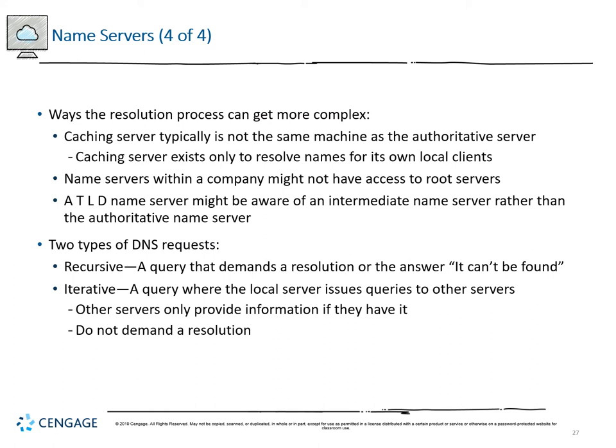The resolution process can get more complex because caching servers only resolve names for local clients, so information can get slightly out of sync. TLD servers might be aware of an intermediate name rather than the authoritative one, requiring additional resolution. Internal name servers may not have access to root servers. There are two types of requests: recursive — demanding a resolution or authoritative 'I cannot find this' response — and iterative, which casually queries servers that only provide information if they have it.